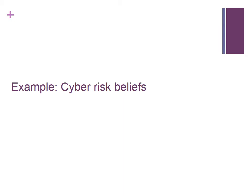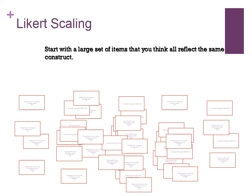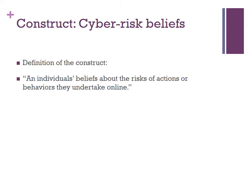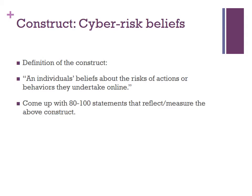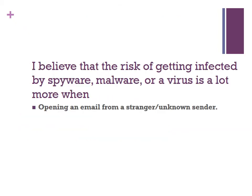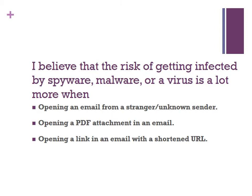If I want to measure that using a Likert scaling methodology, the first step always involves starting with a large set of items — typically 80 to 100 items — that you think reflect the same construct. The construct definition is: an individual's beliefs about the risks of actions or behaviors they undertake online. Sample items might be: 'I believe the risk of getting infected by spyware, malware, or a virus is higher when opening an email from a stranger, opening a PDF attachment, or opening a link with a shortened URL.' Each item must be answerable using a 1-to-5 strongly disagree to strongly agree response scale.